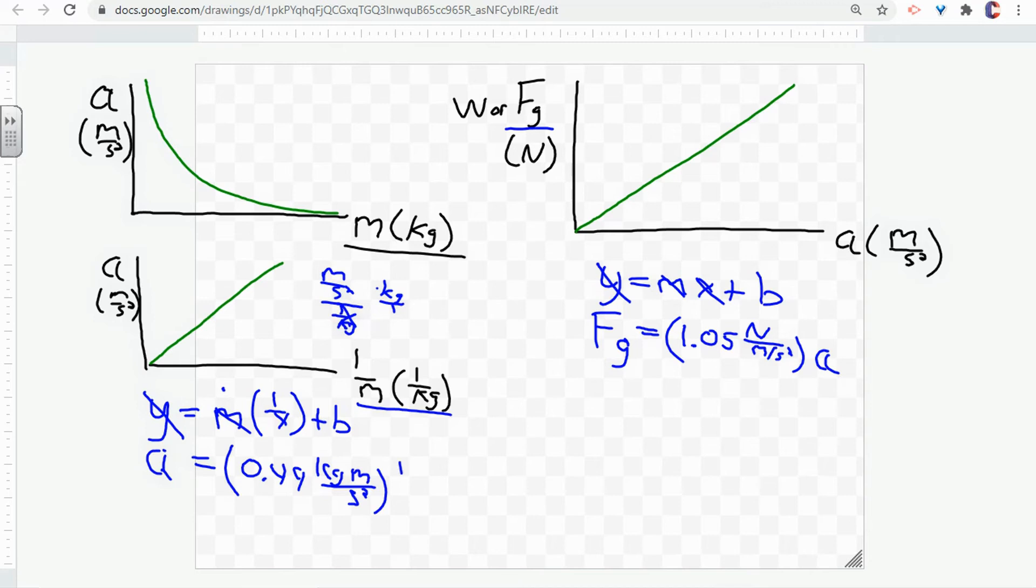And that takes care of our slope. 1 over X becomes 1 over M. And if we don't have a mass, there's nothing to accelerate. So our vertical intercept for that case should be 0.